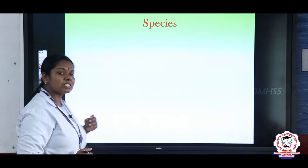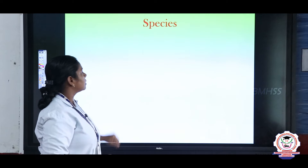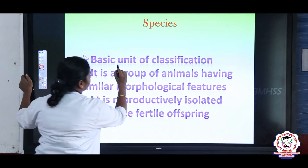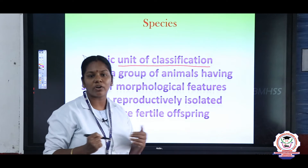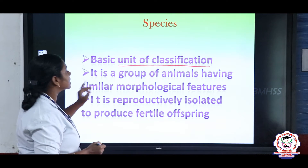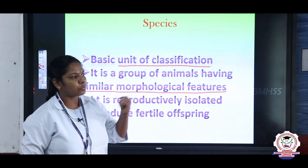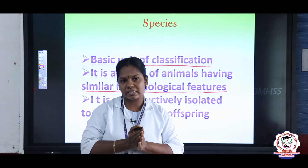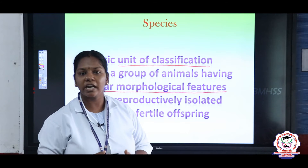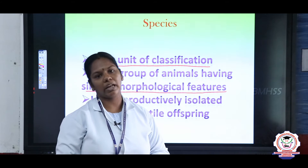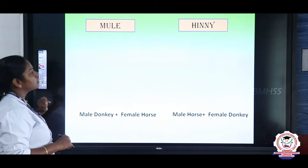Now, which is the lowest level? We are going to study about species first. Species are the basic unit of classification. Species are mainly based on their similarities — the close relationship between organisms can be noted at the species level. It is a group of animals having similar morphological features. Organisms with closely resembled characters are classified under the same species. It is reproductively isolated, meaning closely related organisms can reproduce to produce fertile offspring.